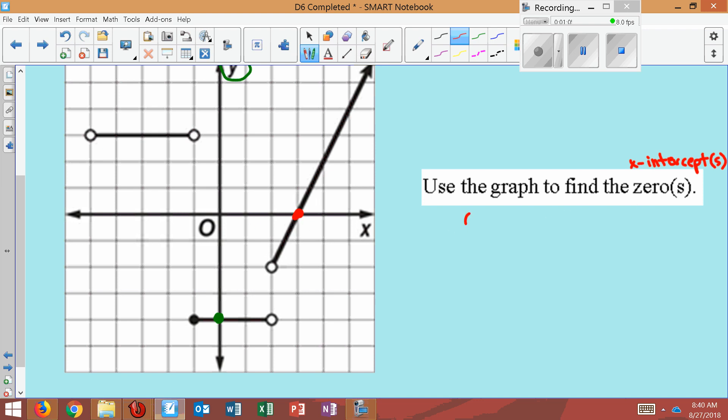You could list it as a coordinate point, and it's 3, 0, being a 0. Or you could say an x-intercept at x equals 3. You could do it that way as well.